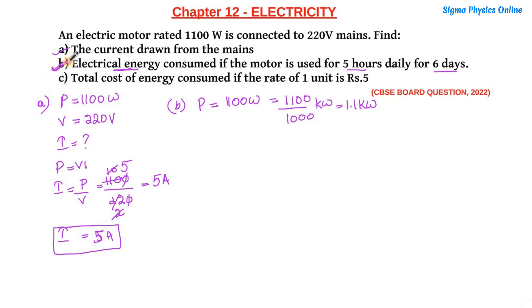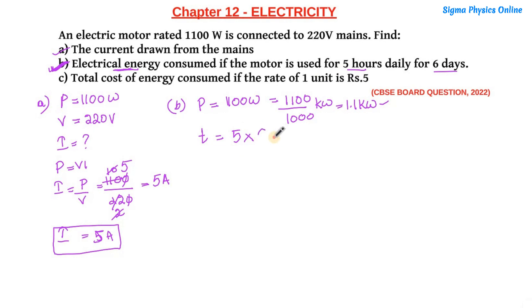When you have questions related to electric bills or electricity consumed in a house, always convert power into kilowatts, find the time in hours, and then find electrical energy in kilowatt-hours or units. The time given here is five hours daily into six days, so the total time is 30 hours.